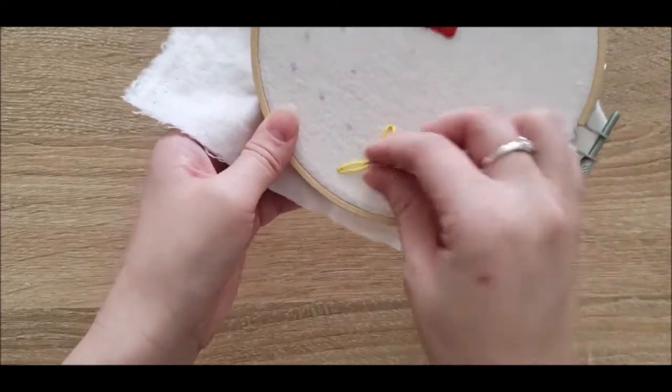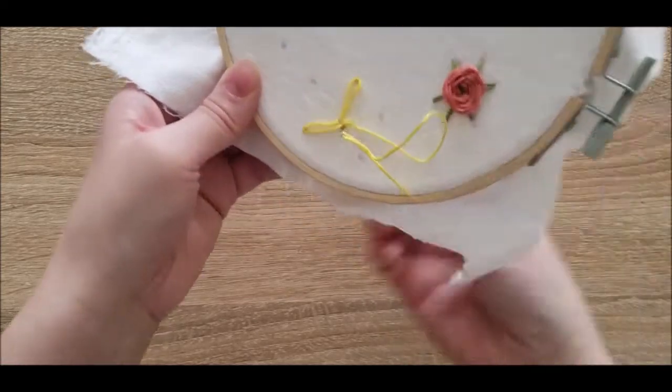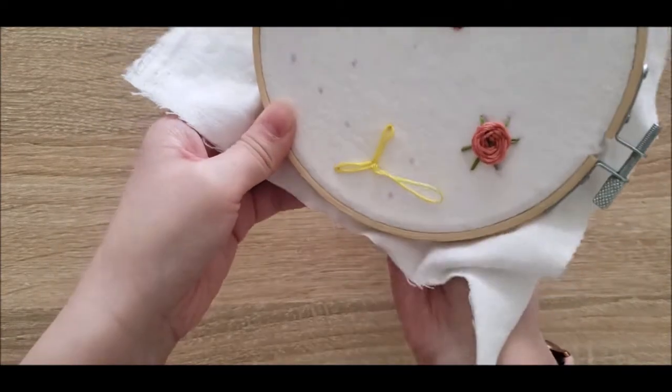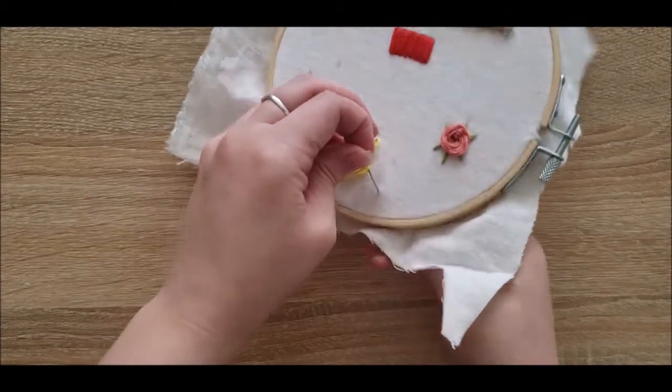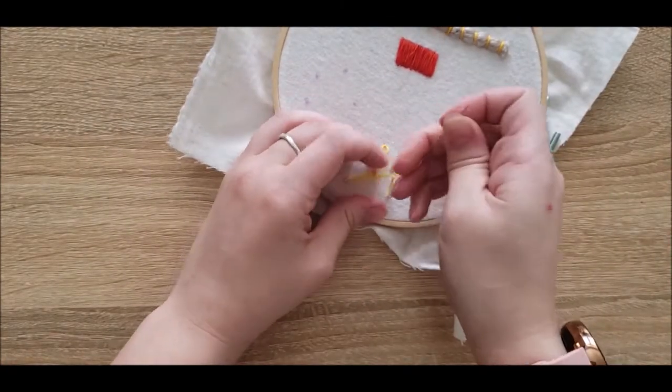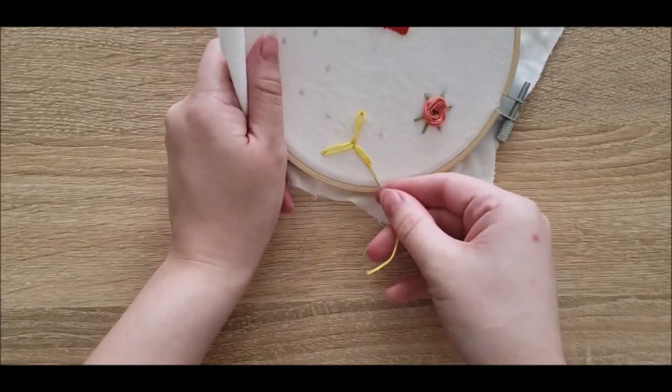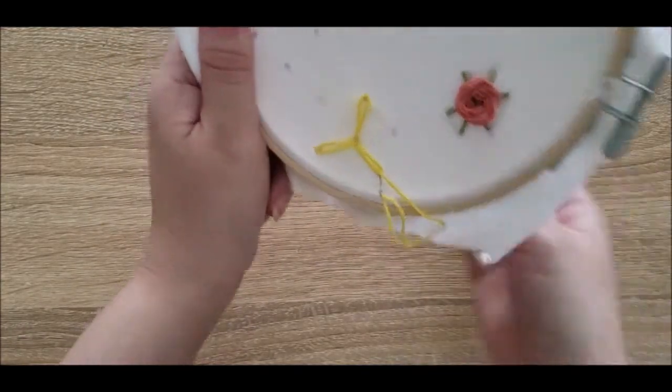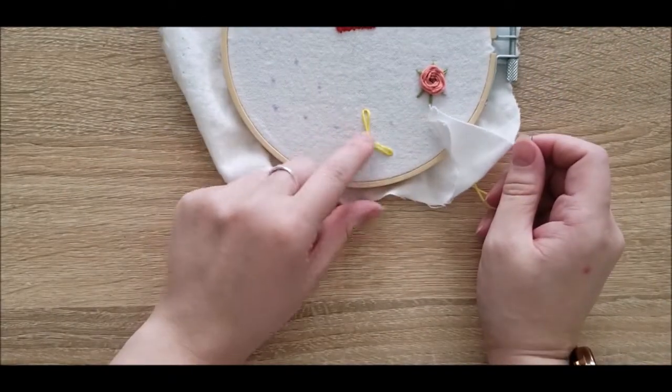One more nice and slow. Up through the middle, back down through the middle, don't go all the way through. Keep your loop, go up through your dot, catch your loop, pull all the way through until it's nice and tight, and then tack it down by going right on the other side.